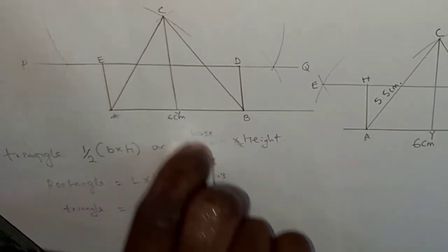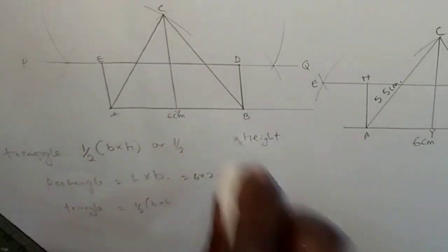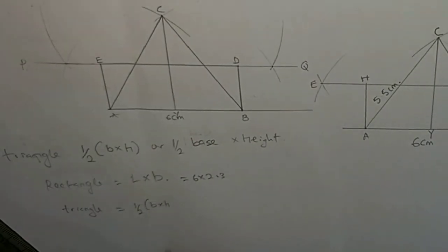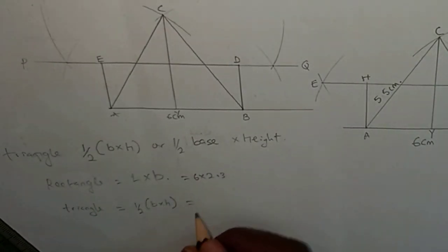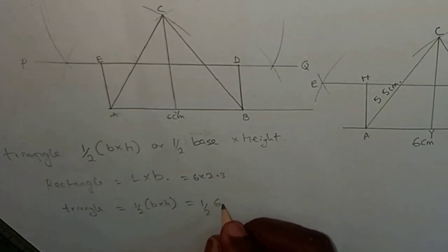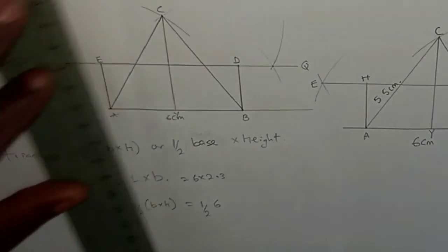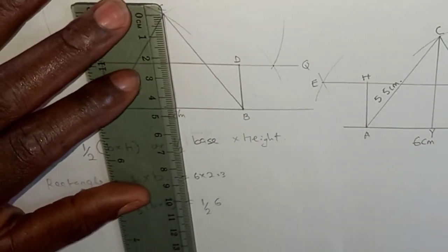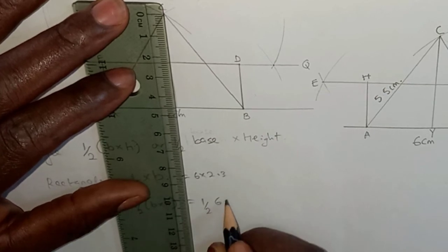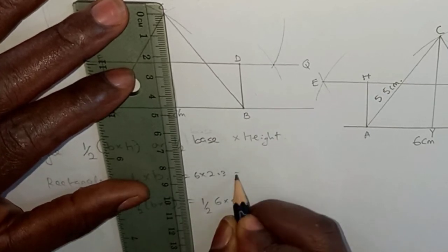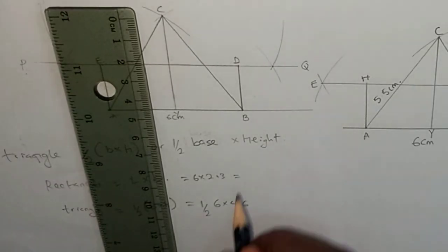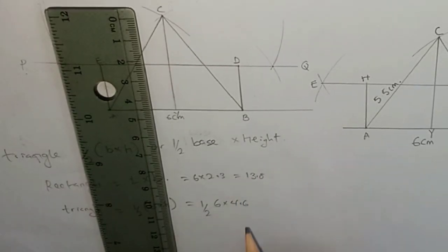The base is 6 centimeters and the height from C to Y measures 4.6 centimeters. So the area of the triangle equals half times 6 times 4.6, which equals 13.8 square centimeters. The area of the rectangle is 6 times 2.3, which also equals 13.8 square centimeters. So it is absolutely correct.